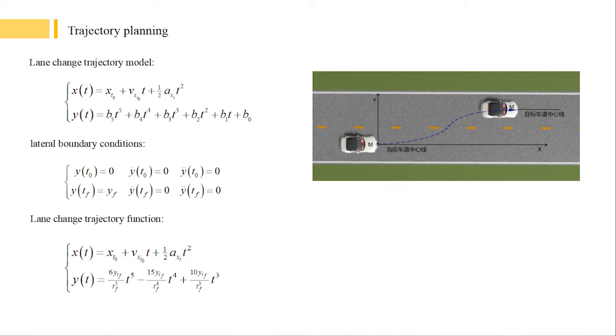Therefore, the vehicle is driving on the road in a longitudinal variable acceleration motion. Lateral displacement trajectory is described by a quintic polynomial.